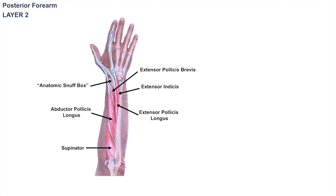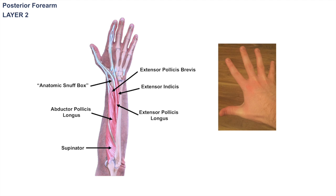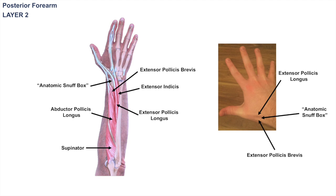The final muscle in layer two is the extensor indicis. If you stretch out your right hand, you can actually see the anatomic snuff box — the depression surrounded by the tendon of the extensor pollicis longus and the tendon of the extensor pollicis brevis. That area is important because the scaphoid bone is located there. In some patients who have had a fall on an outstretched hand, they can get an injury to the scaphoid bone. We can apply pressure in the anatomic snuff box to see if that elicits pain, which is a way to check if the scaphoid has been damaged.